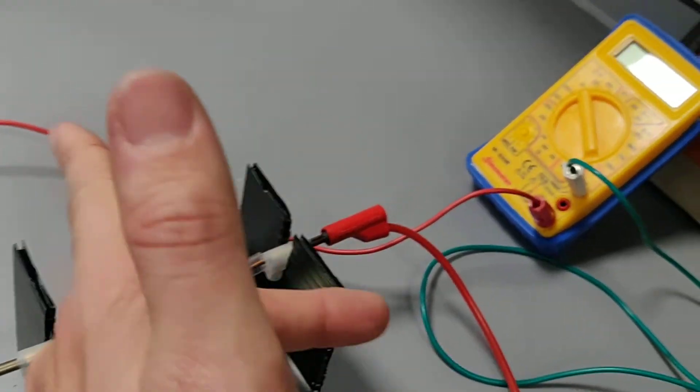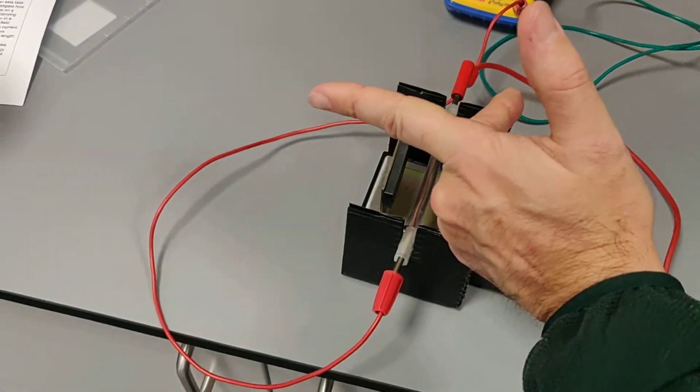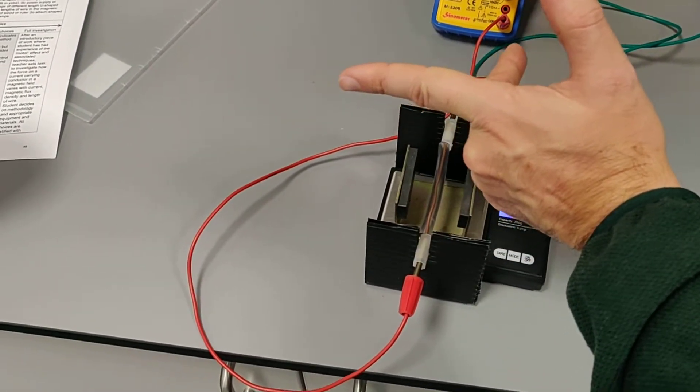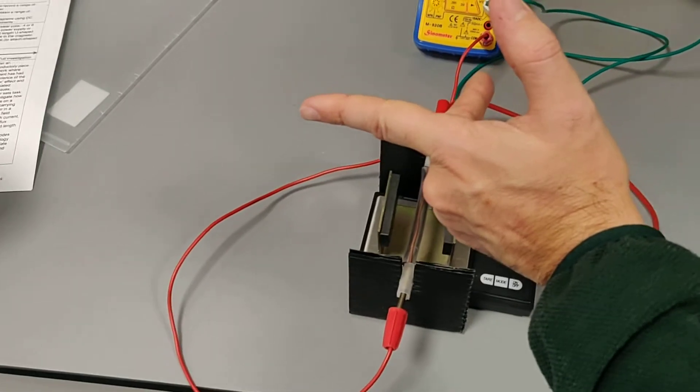So the force on the wire is upward. That means the magnetic field is, if I come around here, perhaps that's a bit more obvious. The magnetic field is going in the direction of my first finger, which is from right to left on your screen there.